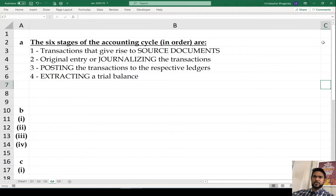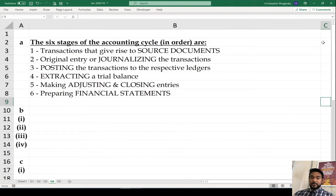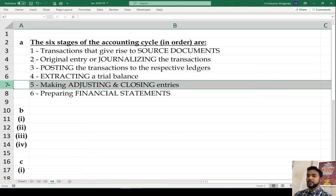Step five: you have to do your adjusting and closing entries - your accruals, prepayments, provision for bad debts, provision for depreciation, and transfer to the income statement. Then you have your financial statements. I've seen other versions of the accounting cycle with more than six steps that include adjusted trial balance and post-closing trial balance, but they asked for six steps, so this is what you do.